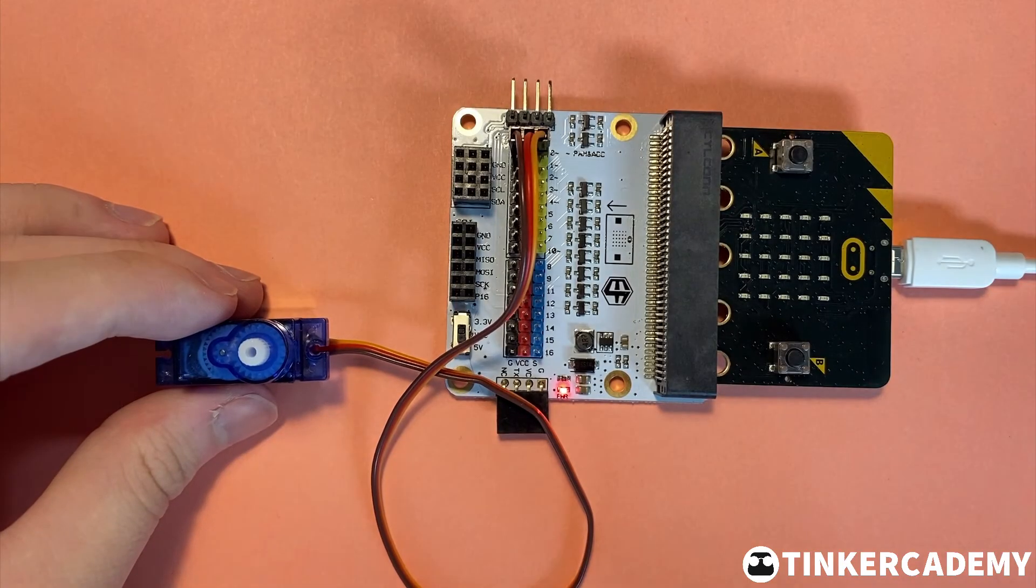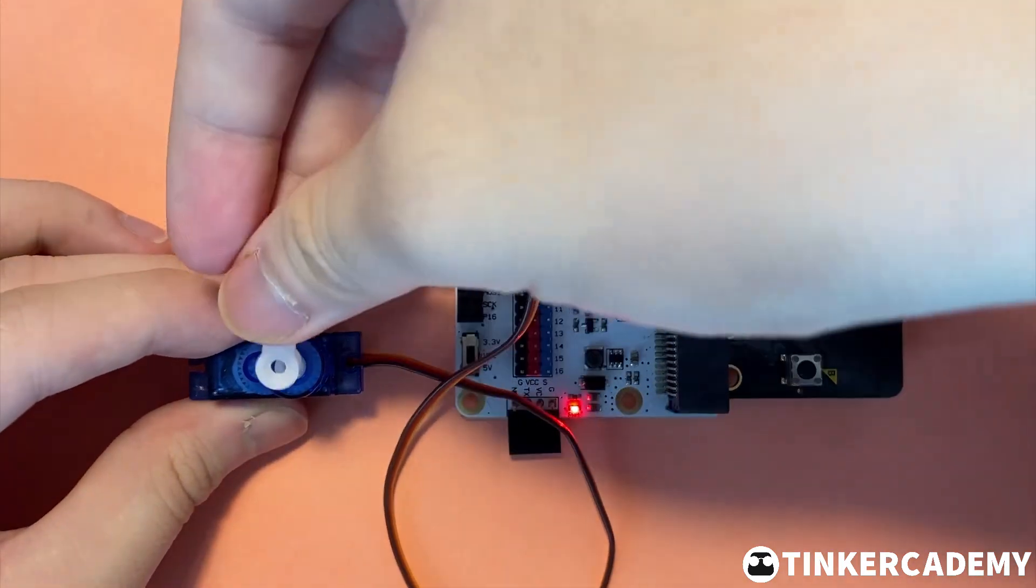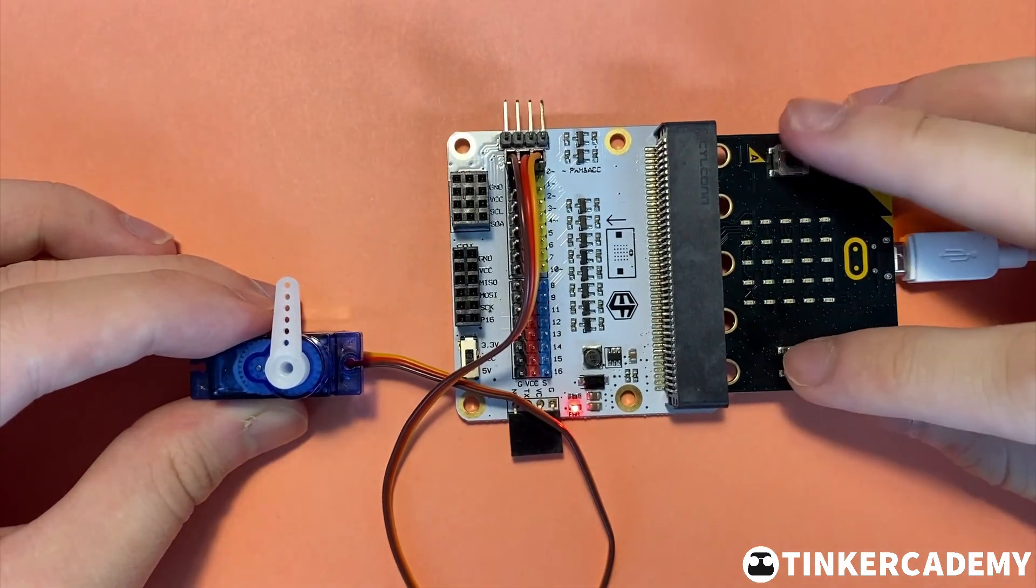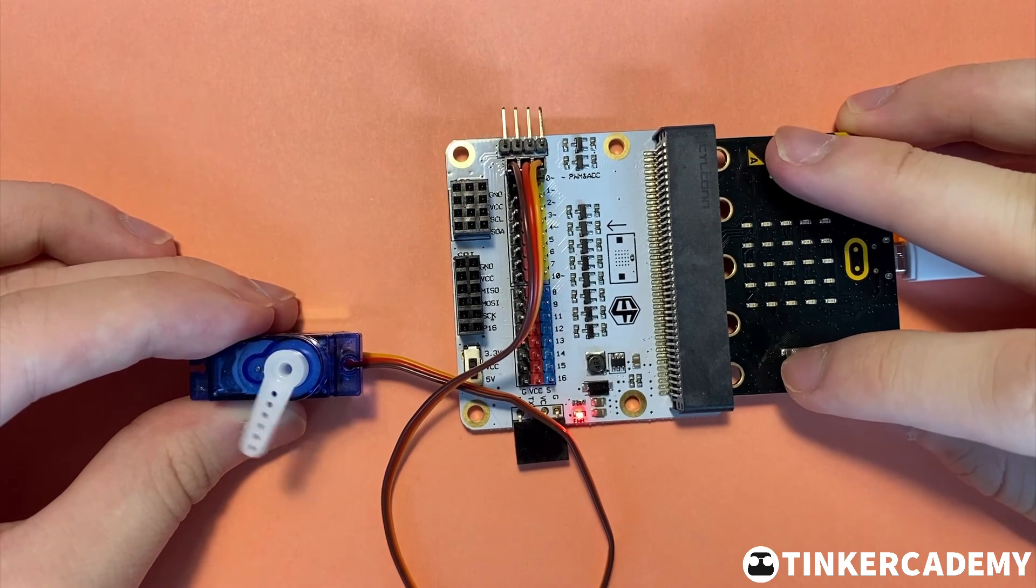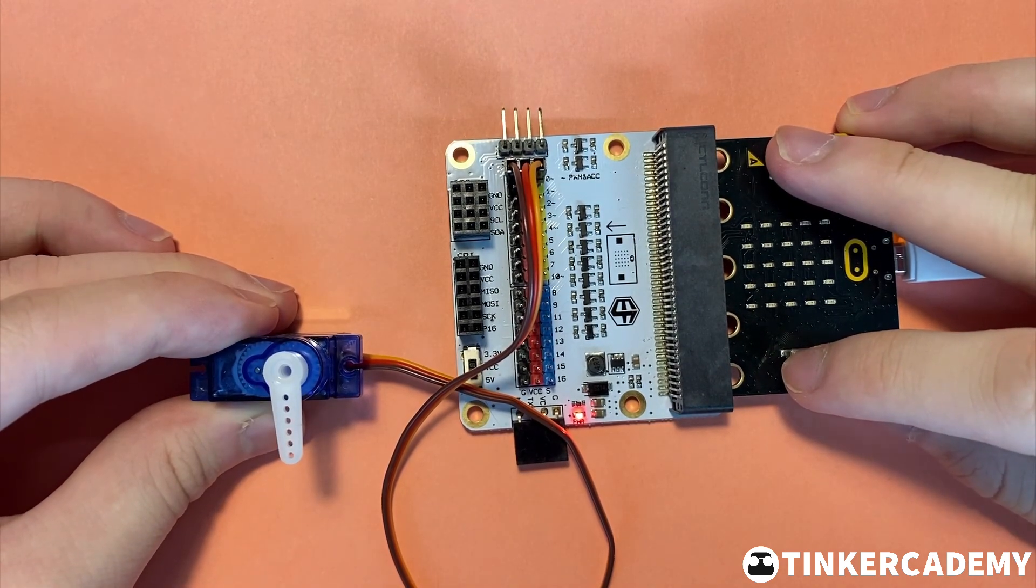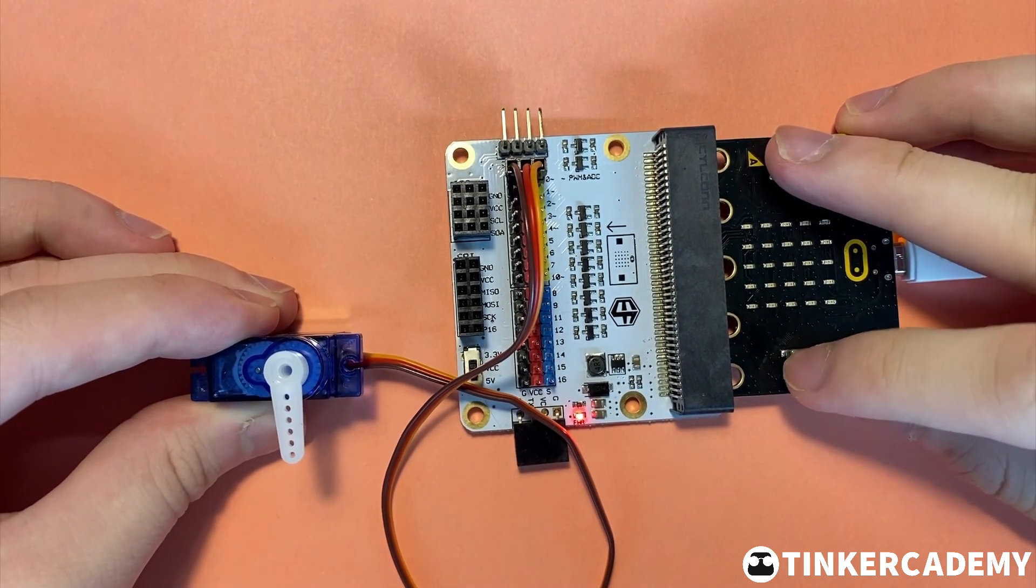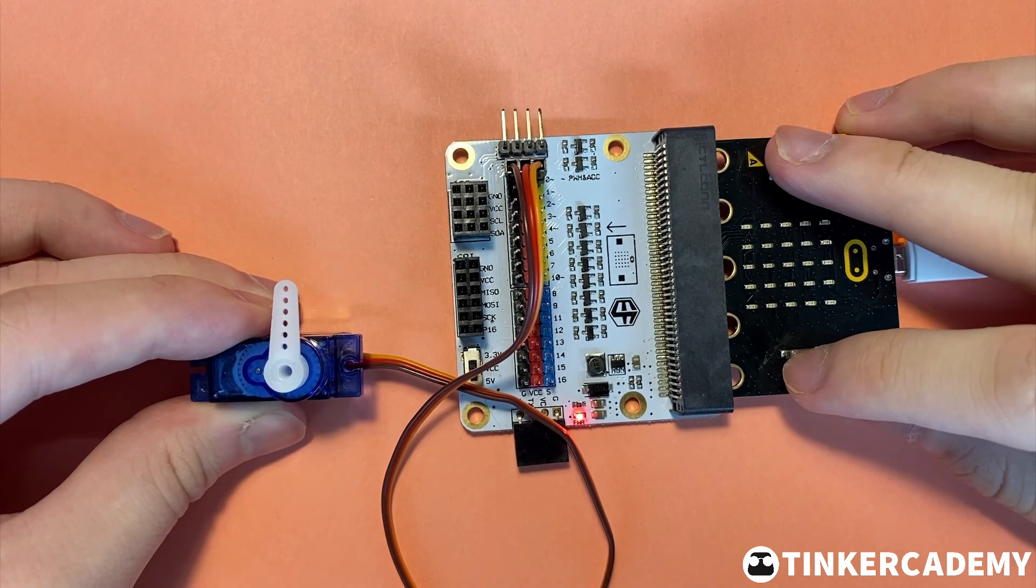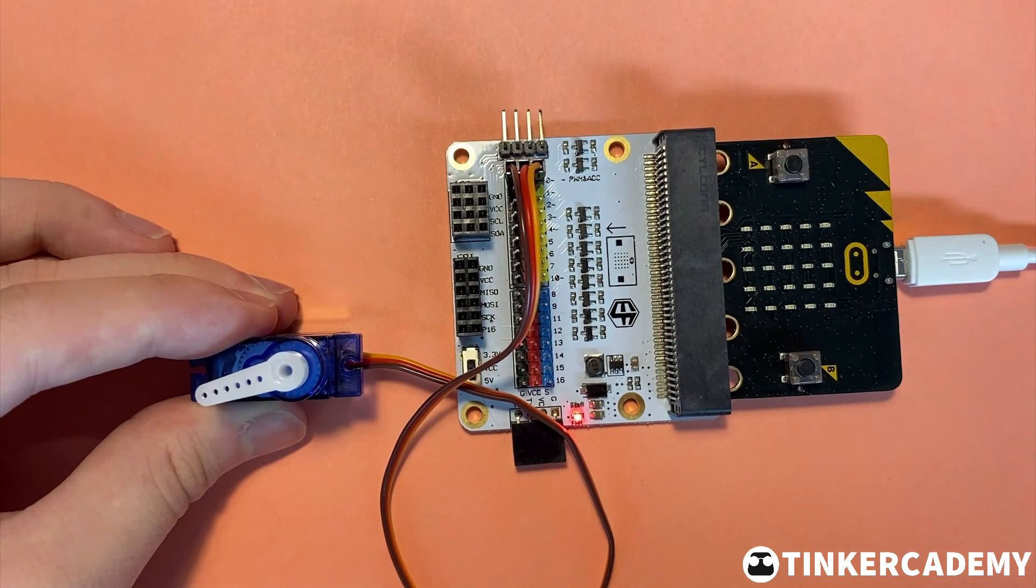Note that regular servo motors have 180 degree limits. When button A is pressed, the motor rotates 180 degrees in one direction. When button B is pressed, the motor rotates 180 degrees back in the other direction. Finally, when both buttons are pressed at the same time, the motor rotates 90 degrees.